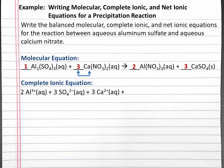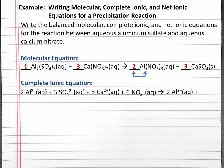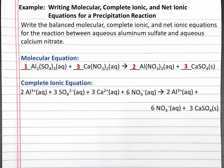Calcium nitrate is also aqueous, so we'll split it apart since it's a strong electrolyte as a soluble salt. We have 3 calcium 2+ ions, and 3 times 2 nitrate, so 6 nitrate ions. For our products, we're producing aluminum nitrate, which is also a strong electrolyte as a soluble salt, so we'll break it apart into 2 aluminum 3+ ions and 6 nitrate ions. Our calcium sulfate is an insoluble salt, which means it's not a strong electrolyte, so we do not break it apart — it remains a solid.